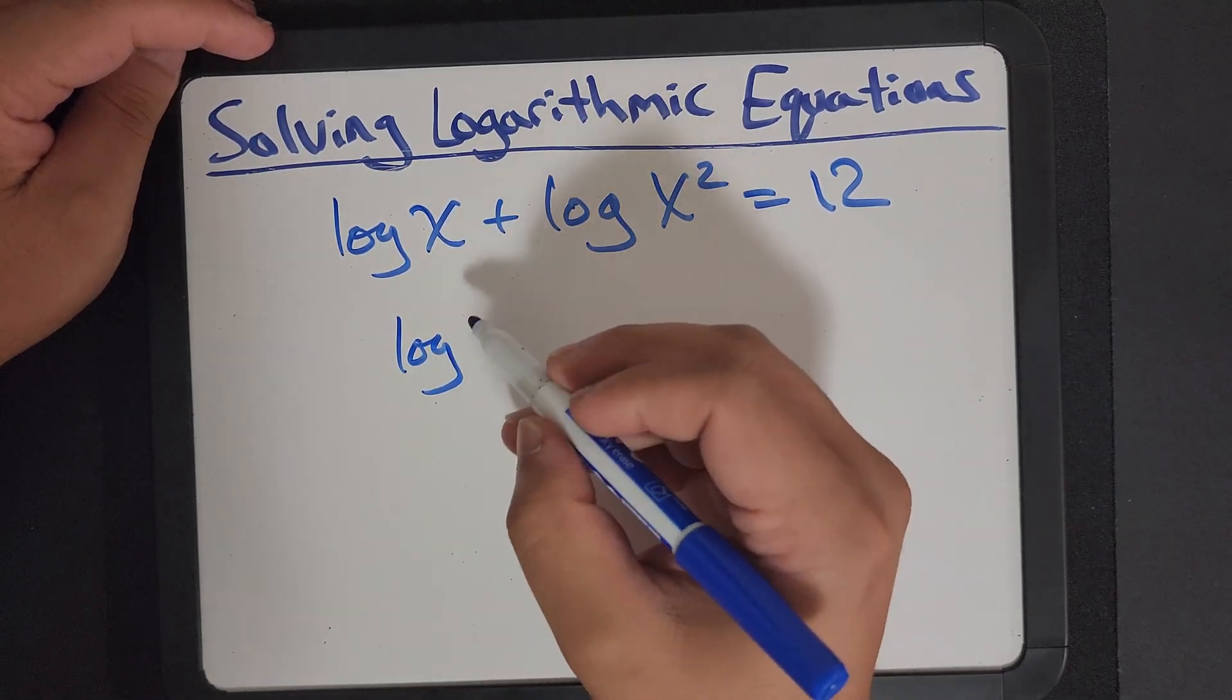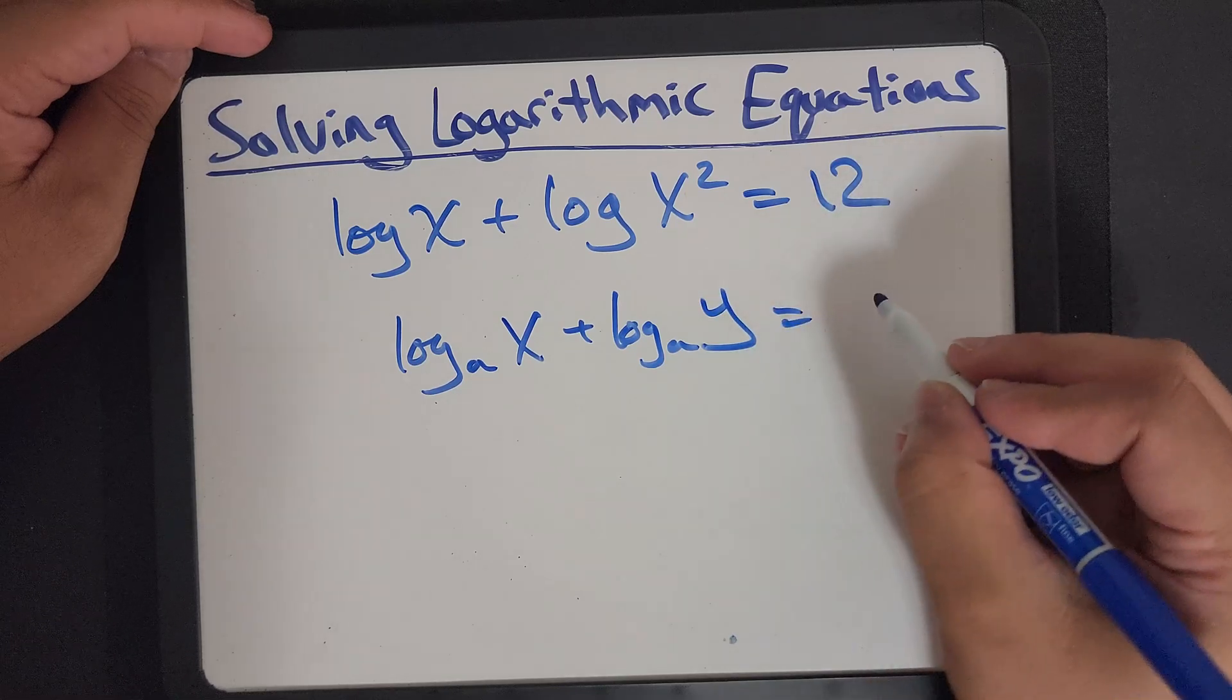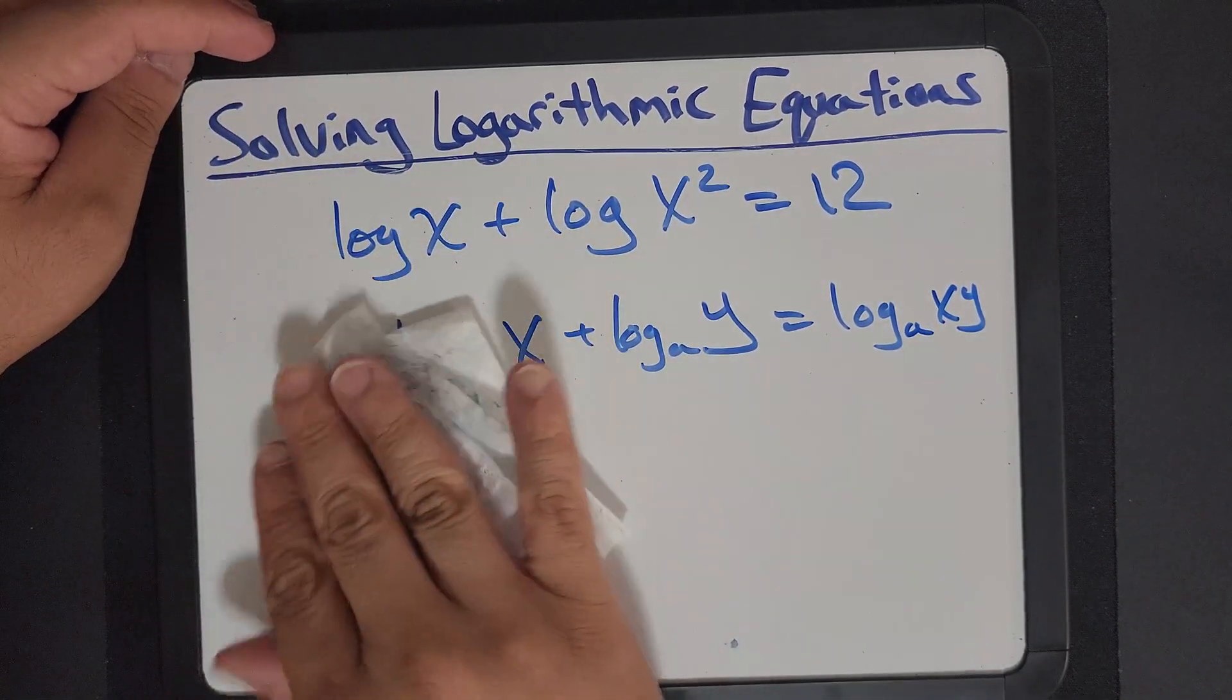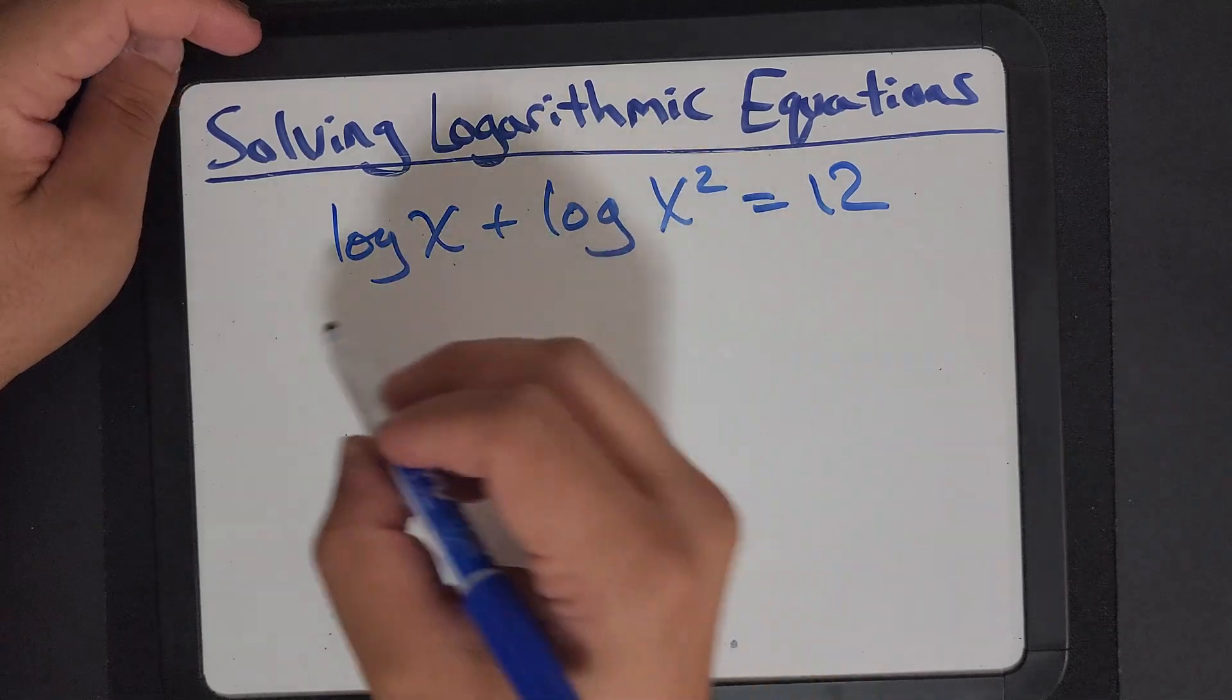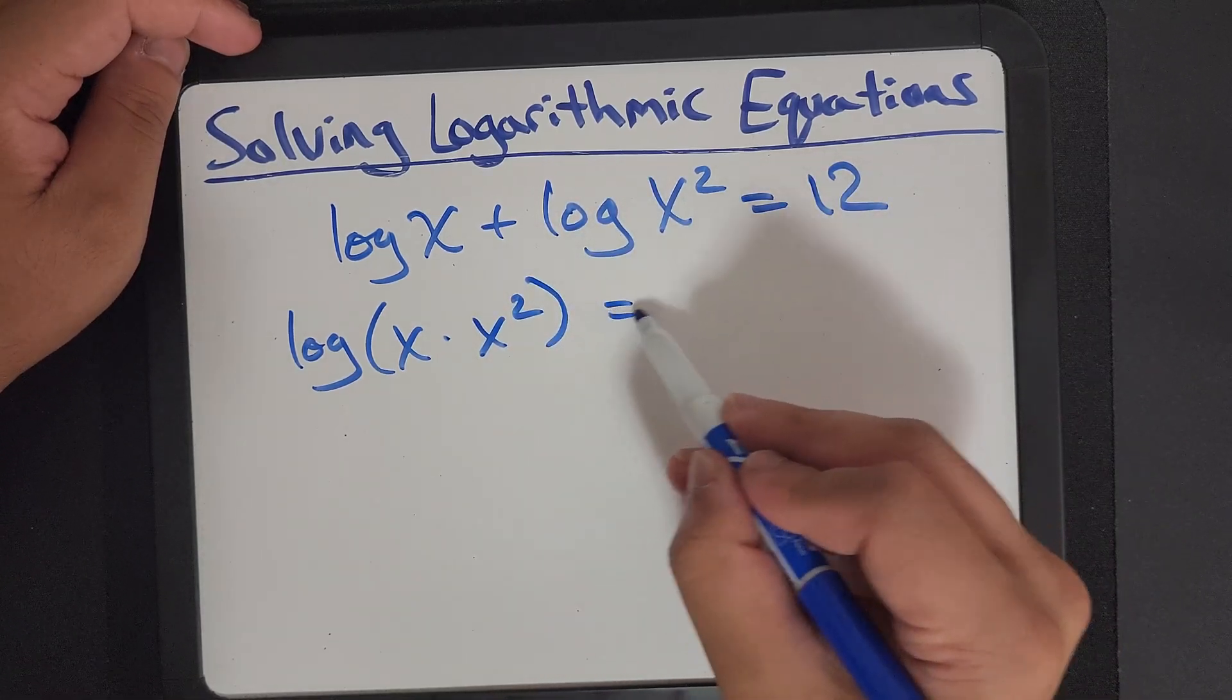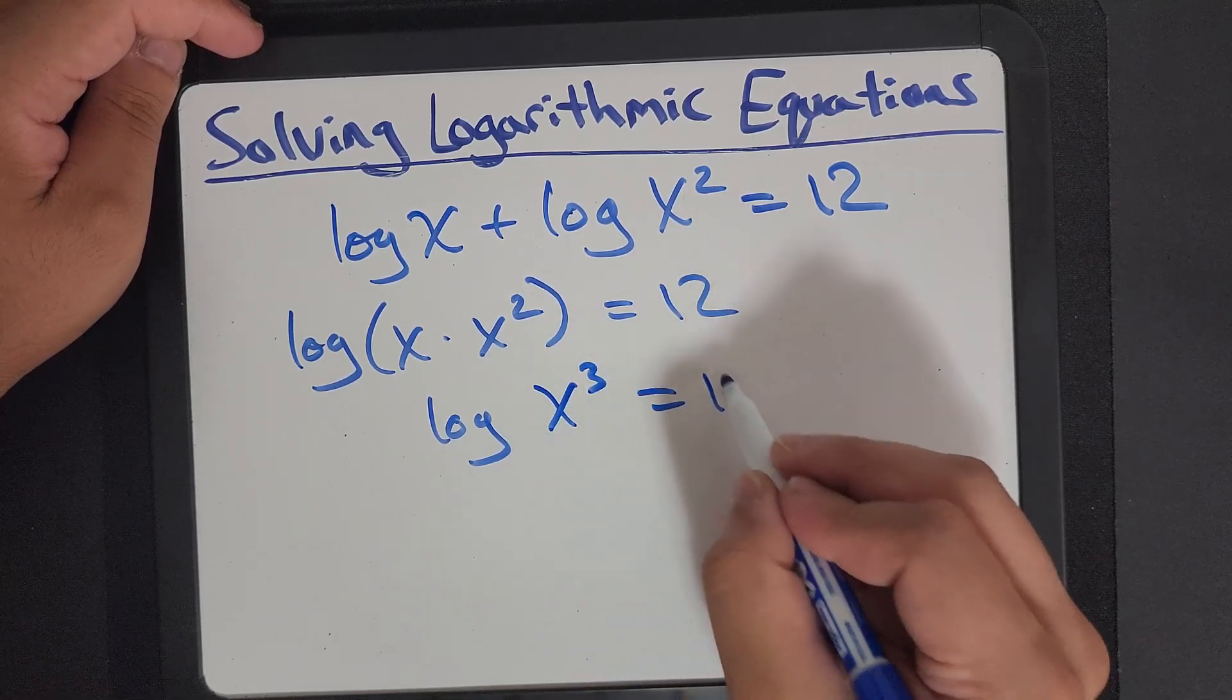Do you remember we can do this? Remember log? That's our product log. So according to that, we can write log of x times x squared equals to 12, which is log x cubed equals to 12.